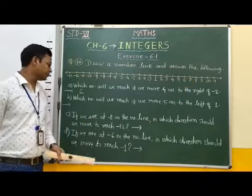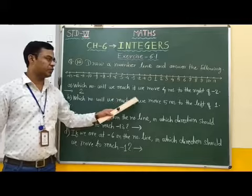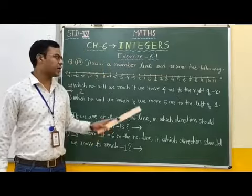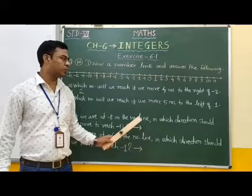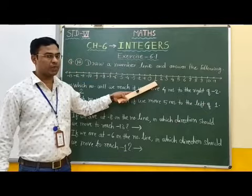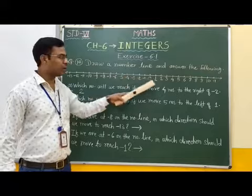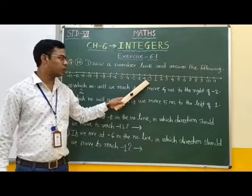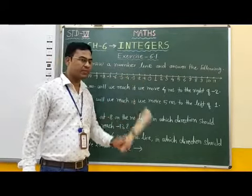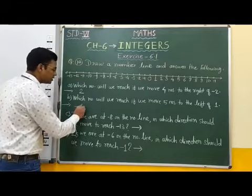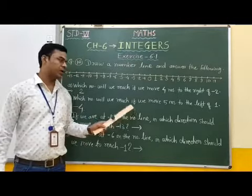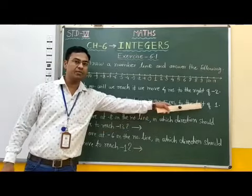Next question: Which number will we reach if we move 5 numbers to the left of 1? We start from 1 and move 5 numbers to the left: 1, 2, 3, 4, 5. Then we will reach at minus 4. Therefore, the answer of this question is minus 4. We can say that we will reach at minus 4 if we move 5 numbers to the left of 1.